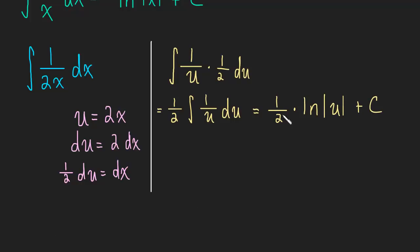And as always, we started in x's, so why don't we plug back in, what is u? U is simply 2x. So this is 1 half the natural log, the absolute value of 2x, plus c.